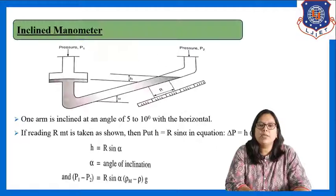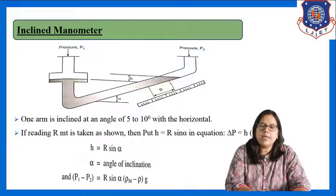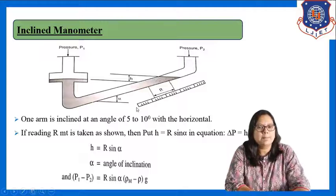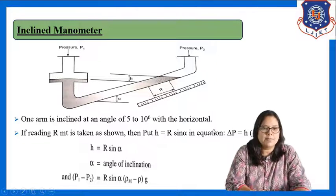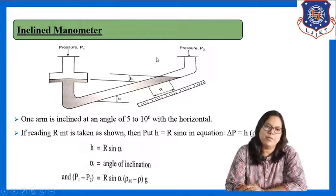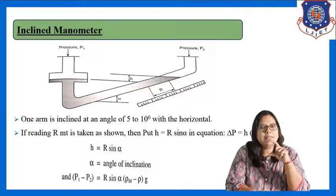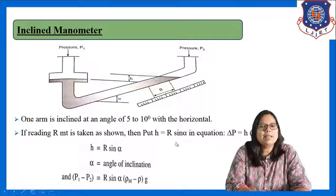Now let us see another type of manometer, which is the inclined manometer. The basic principle is the same as the U-tube manometer. The main difference is that one leg of this manometer is inclined at some angle with the horizontal — generally at an angle of 5 to 10 degrees. The equation is the same as the U-tube manometer, but the height h is replaced by h = r·sin(alpha).